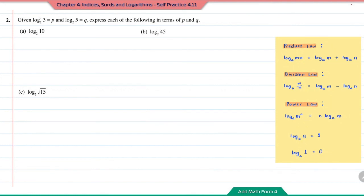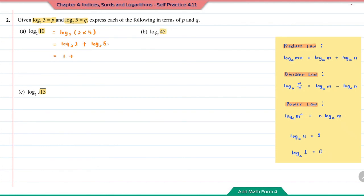Question number 2: given log base 2 of 3 is equal to p and log base 2 of 5 is equal to q, express each of the following in terms of p and q. All expressions are in log base 2. We need to convert the numbers 10, 45, and 15 into multiplications containing 3 and 5. For question A, the number 10 can be written as 2 times 5. Using the product law, this is log base 2 of 2 plus log base 2 of 5. Log base 2 of 2 is 1 and log base 2 of 5 is q, so the answer is 1 plus q.